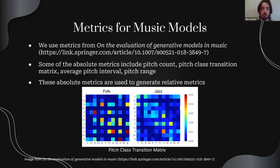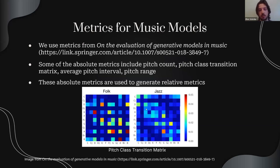Another quite interesting metric is the pitch class transition matrix. Basically it gives you probabilities of transitioning from one pitch to another. For pitch class, we're not worrying about which octave we're in — just which of the 12 pitch classes. So if the current note is a D, what's the probability that the next note is an F? That would be represented by a probability in this matrix. The important part is that we can use these to generate relative metrics, because these raw numbers alone don't allow you to compare music models — there's no such thing as a good or bad pitch count in isolation, so we can't directly compare models using these absolute values.